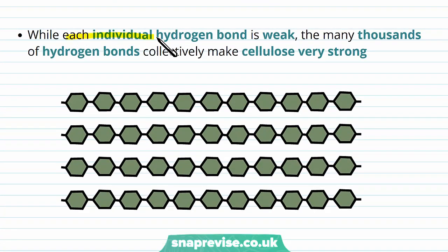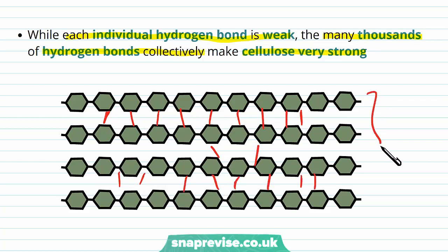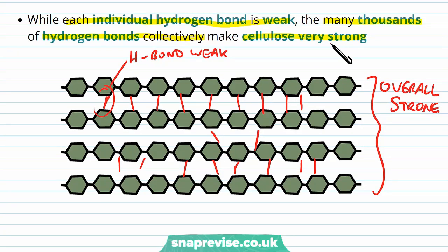Even though each individual hydrogen bond is quite a weak intermolecular force, there are many, many thousands of these running along between chains. So the collection of hydrogen bonds makes cellulose very strong. If it were held by one single hydrogen bond, it would be very, very weak. But adding up all of those hydrogen bonds between the chains makes it overall very strong — and we want cellulose to be strong so it can withstand all of that swelling that happens in plant cells.